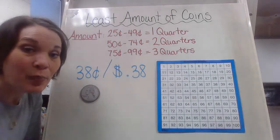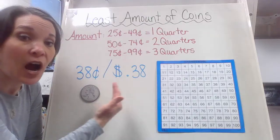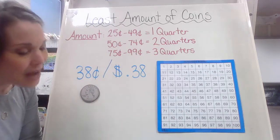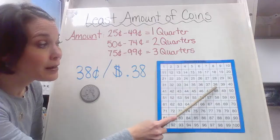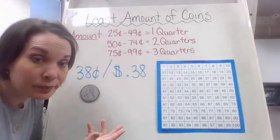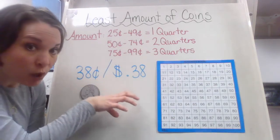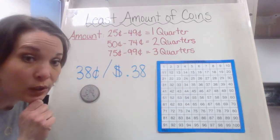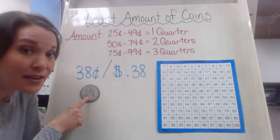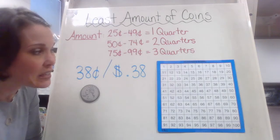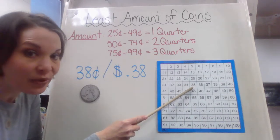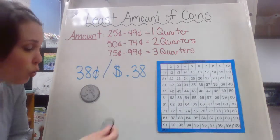So there we have it — one quarter. But now I need to add other coins to get to 38 cents, because right now I'm only at 25. I have to get from 25 to 38. Can I incorporate a dime? I want to start with my largest remaining coin and work my way down. If I'm at 25 and I add 10 more cents, I'll be at 35. So that dime is going to work for me.